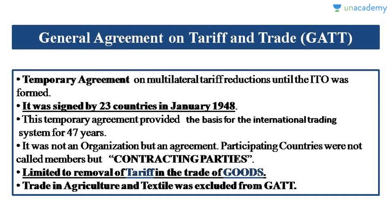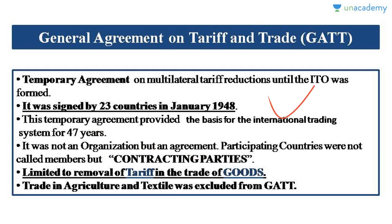We need to know some important things about GATT — the General Agreement on Tariffs and Trade. First of all, it was a temporary agreement, not an organization. It was signed by 23 countries in January 1948 and regulated international trade for 47 years. The countries which participated in GATT were called contracting parties, not members.